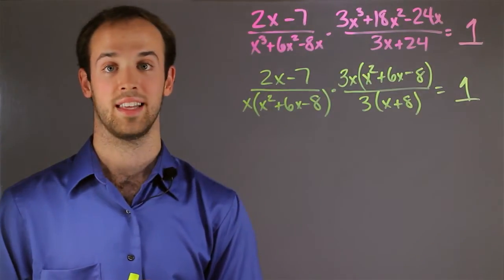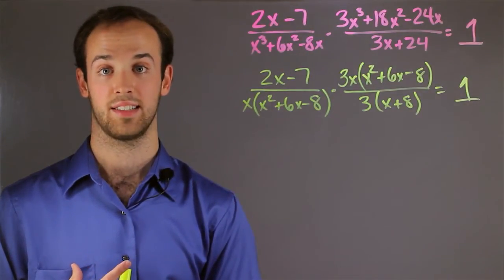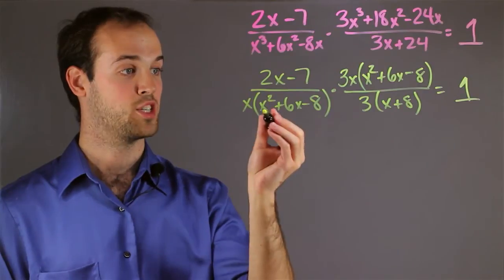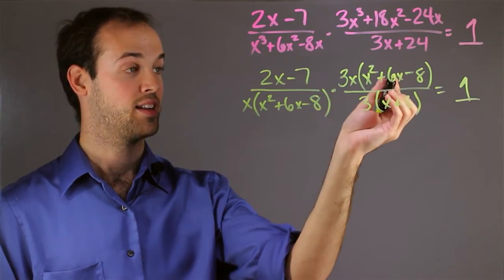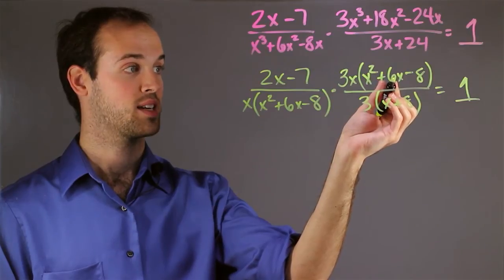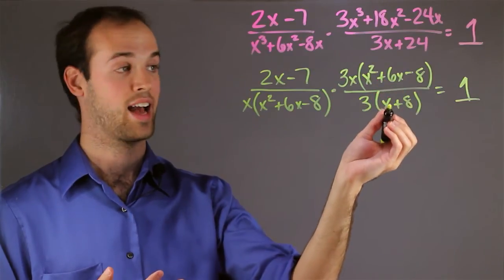So now I see that I have quite a few things that I can cross cancel. For example, I have this big trinomial right here, x squared plus 6x minus 8, and again over here, x squared plus 6x minus 8, which means that I can cancel them both out.